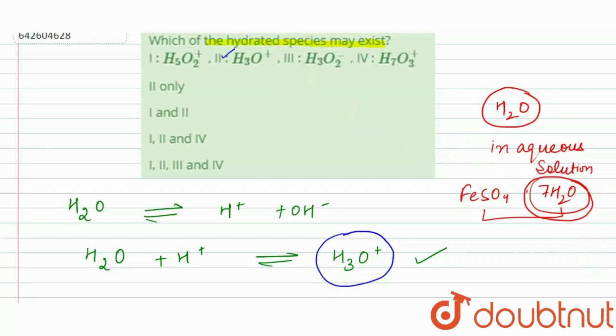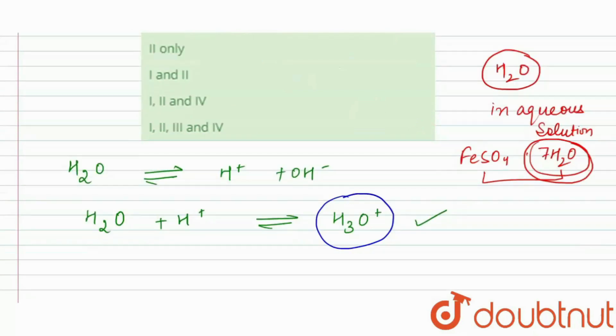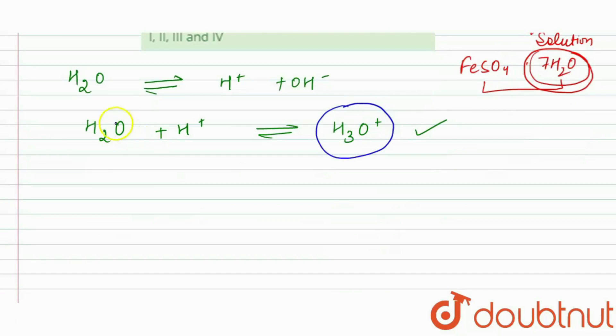And next we will see which will form the hydrated species. So if H2O gives H positive and OH negative, any ion can combine. So if H2O combines with the OH negative, then it forms H3O2 minus.